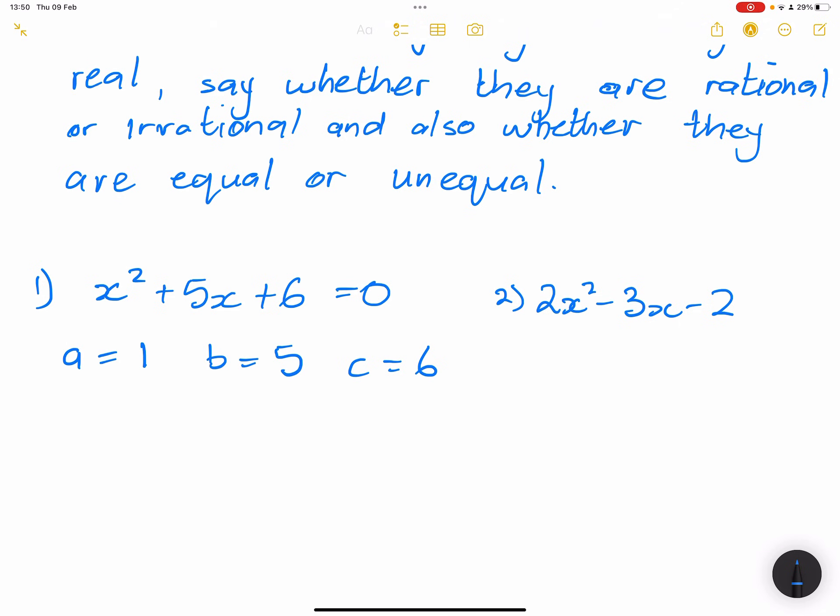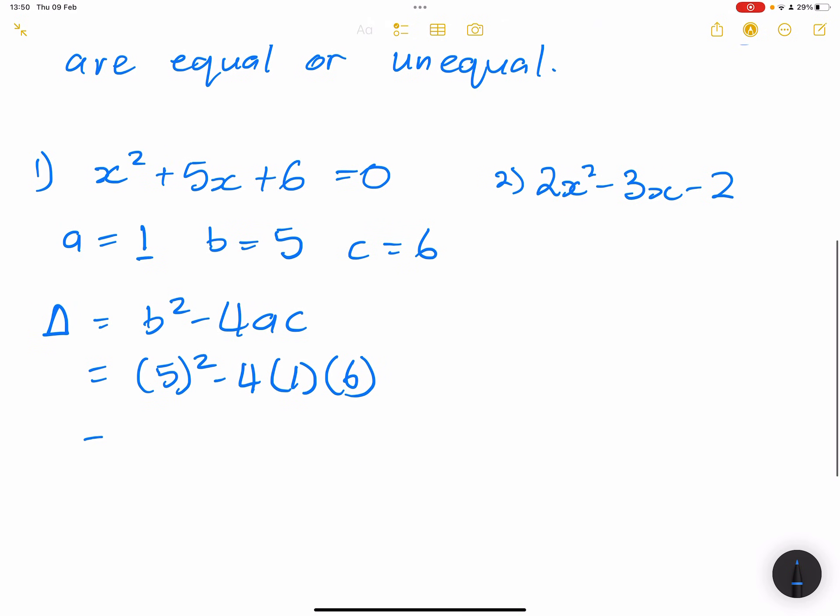Now let's find the discriminant for this first one. It's going to be b² - 4ac. So our b value is 5, that's going to be 5² minus 4 times our a value, which is 1, and our c value is 6. So that's going to be 25 minus 4 times 1, that's 4 times 6, that's going to be 24.